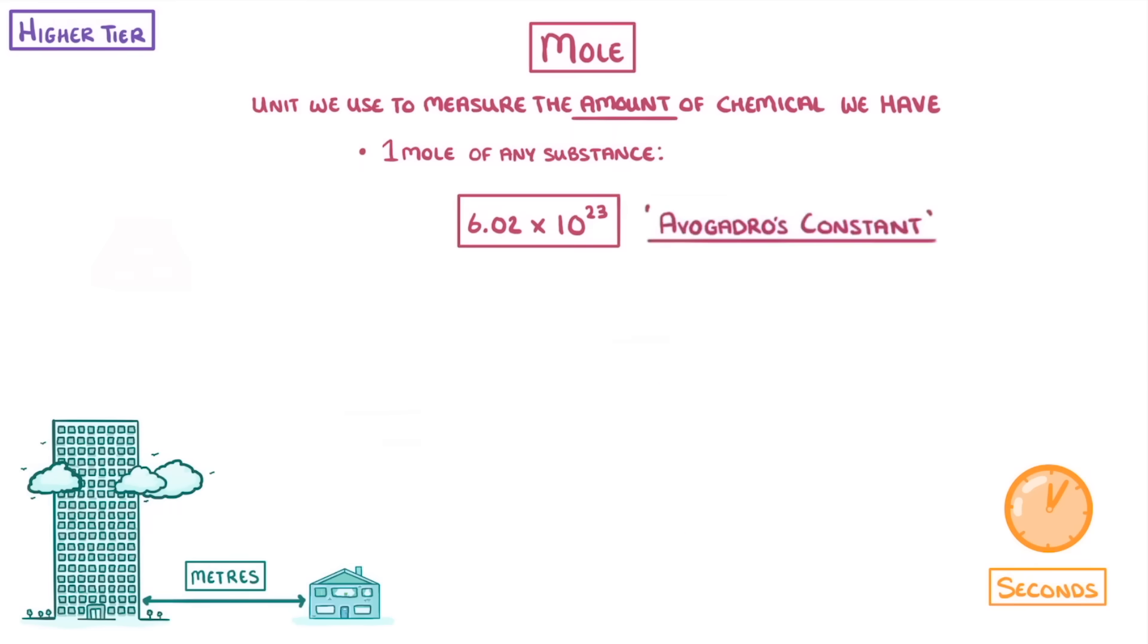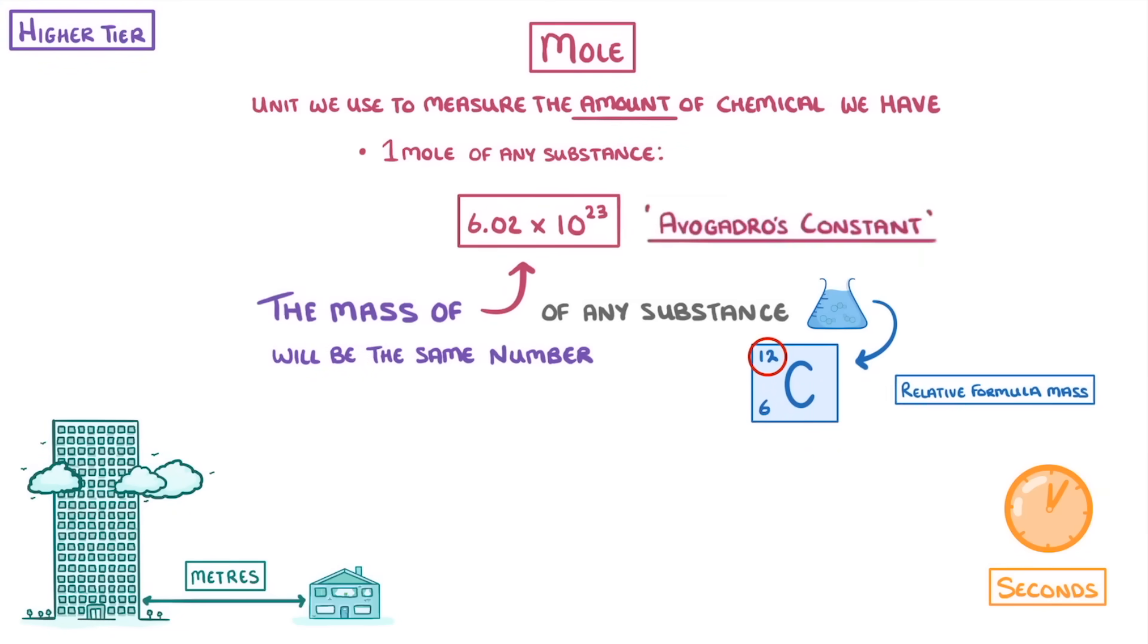And the reason it's this specific number is that the mass of that many particles of any substance would be exactly the same number as that substance's relative atomic or formula mass in grams. So our little pile of one mole of carbon would weigh exactly 12 grams, because carbon's relative atomic mass is 12.